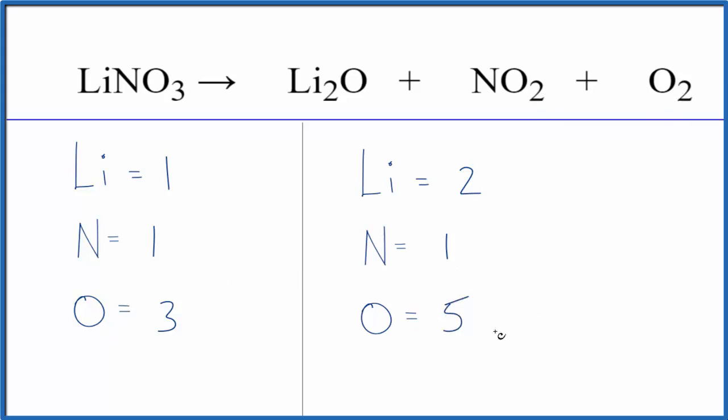I like to leave the oxygens till last, so I'm going to balance the lithium by putting a two here. One times two, that gives me two of those. So the lithiums are balanced. One times two, that'll give me two nitrogens. And then the three times the two, six oxygens.